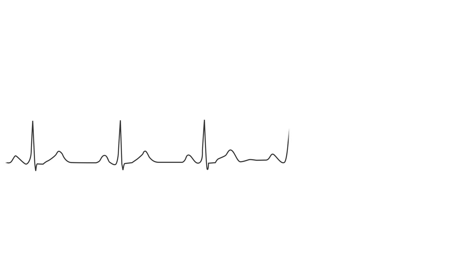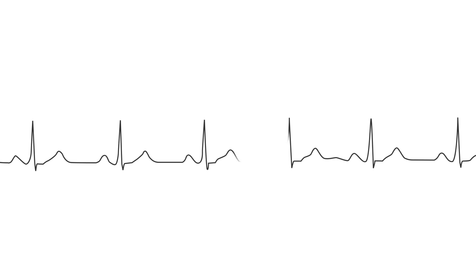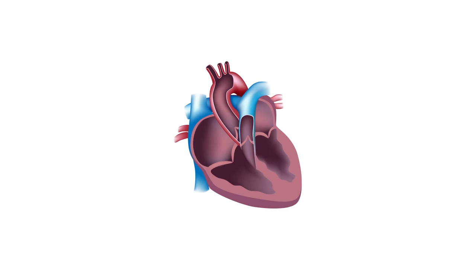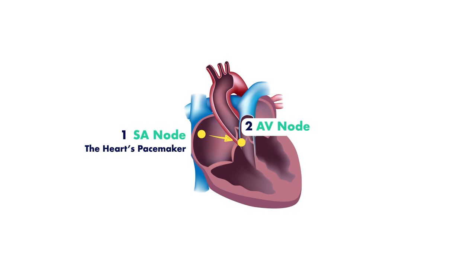Normal sinus rhythm is the default cardiac rhythm that represents the normal electrical activity through the heart. Electrical impulses start at the sinoatrial node, also known as the heart's pacemaker. This produces electrical impulses that are sent to the AV node and subsequently to the ventricles.